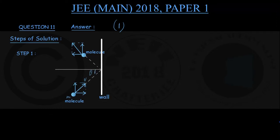...the wall. So if this is theta, this angle is also theta. This angle is theta and this angle is theta. So this V velocity has got two components, one is Vx.